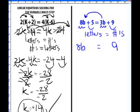And when I move the 3b, because it's a positive, it turns out to be a negative 3b. And over here, I've got a positive 5. I need to move that to the other side of the equal sign. And a positive 5 becomes a negative 5.